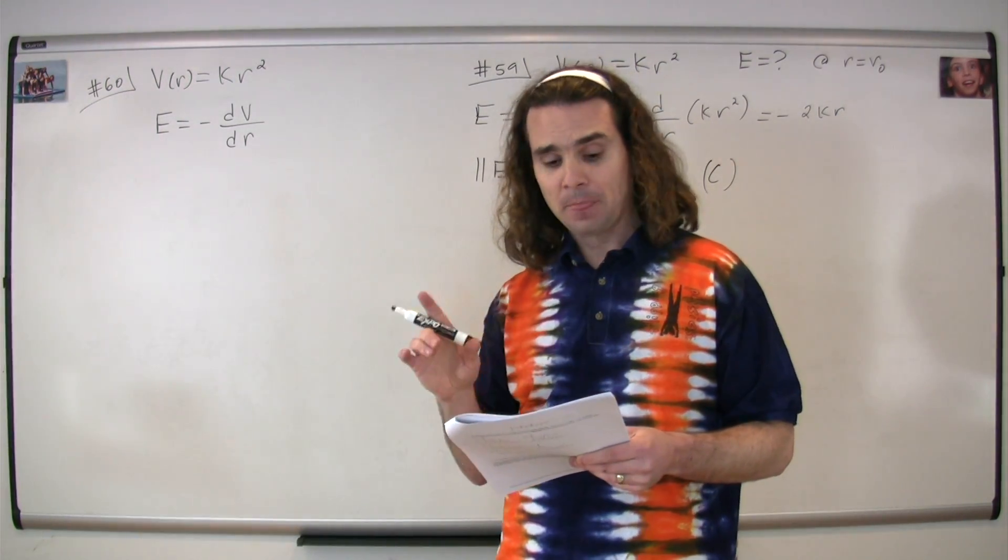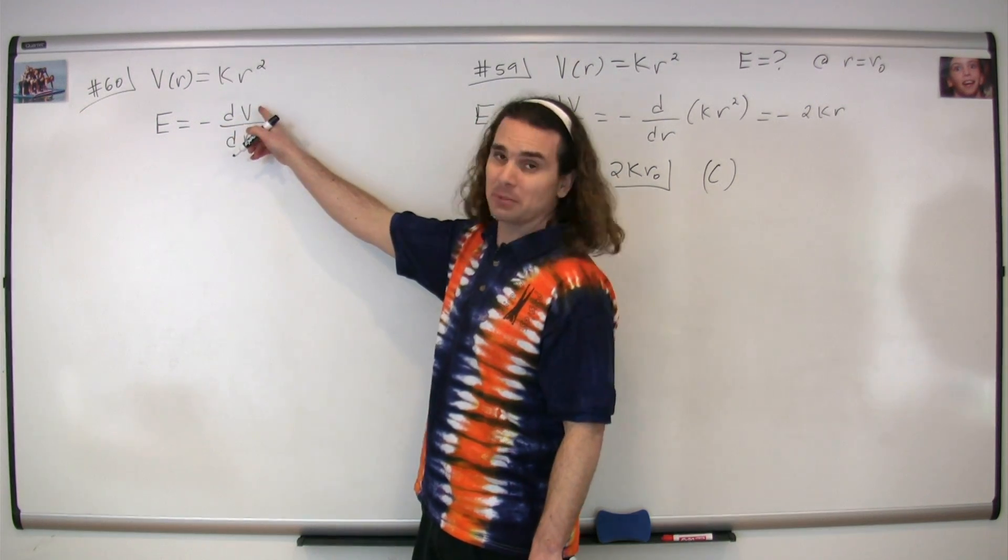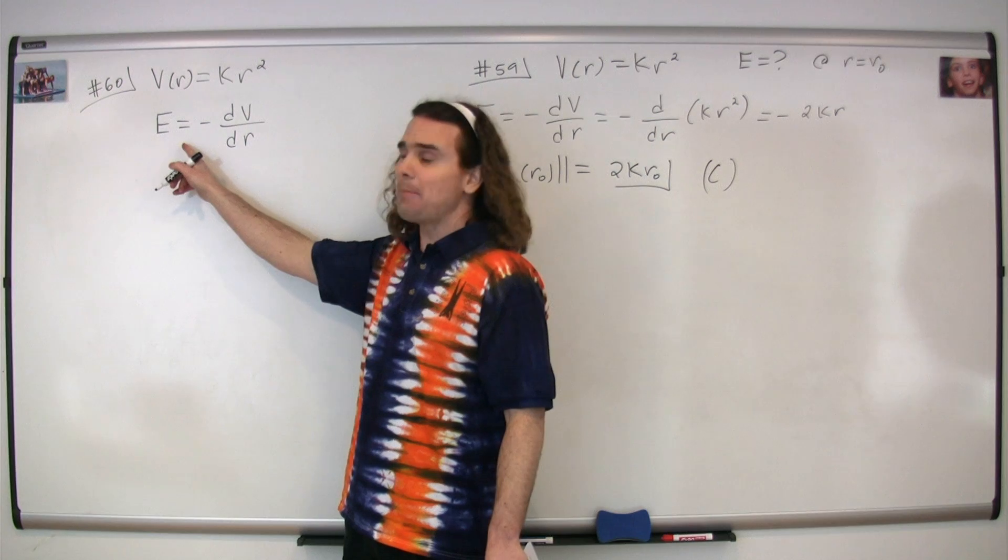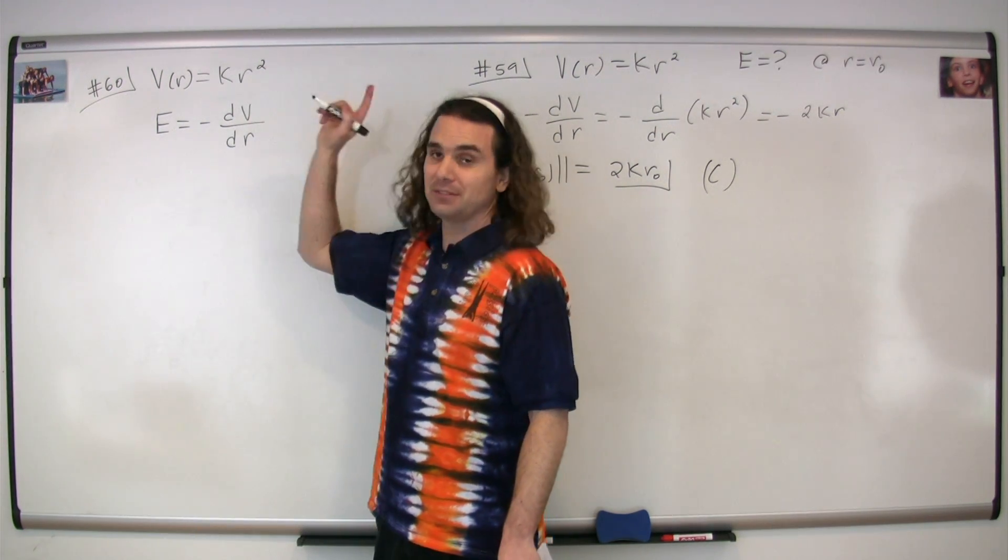Let's start with the electric field. Because the electric field is equal to the negative derivative of the electric potential with respect to position, we know that the electric field is opposite the direction of an increasing electric potential.